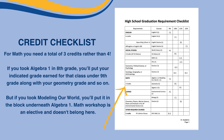For Math, you'll need a total of three credits rather than four. The same rules apply, but if you did Algebra 1 in 8th grade, you'll put your indicated grade earned for that class under 9th grade along with your Geometry grade and so on. But if you took Modeling Our World, you'll put it in the block underneath Algebra 1. Math Workshop is an elective and it doesn't belong here.